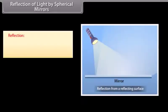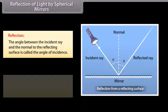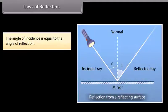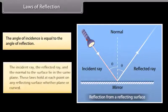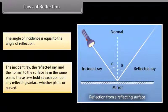Reflection of light by spherical mirrors: The angle between the incident ray and the normal to the reflecting surface is called the angle of incidence. The angle between the reflected ray and the normal to the reflecting surface is called the angle of reflection. The angle of incidence is equal to the angle of reflection. The incident ray, the reflected ray and the normal to the surface lie in the same plane. These laws hold at each point on any reflecting surface, whether plane or curved.